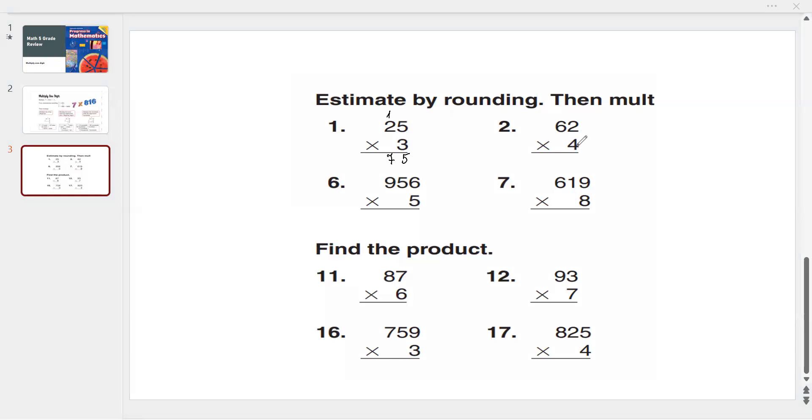The next example: 62 times 4. 4 times 2 is 8 ones. Then 4 times 6 is 24 tens. So it's going to be 248.